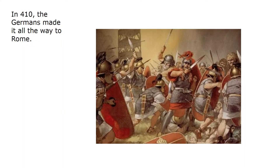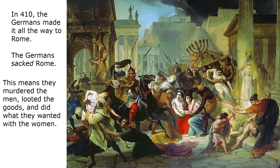In 410, the Germans made it all the way to Rome and sacked it — murdering the men, looting the goods, and doing what they wanted with the women.